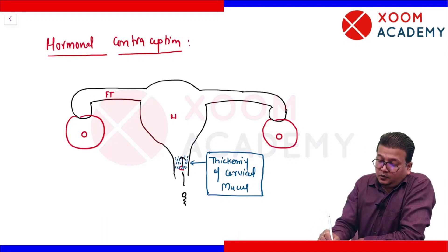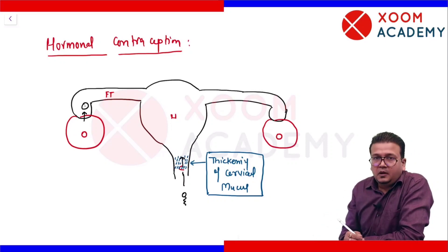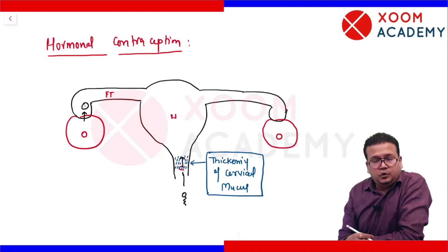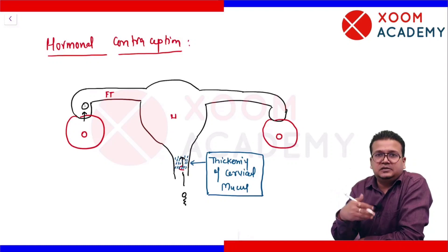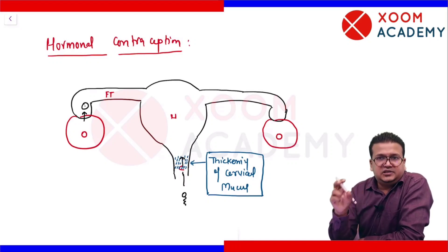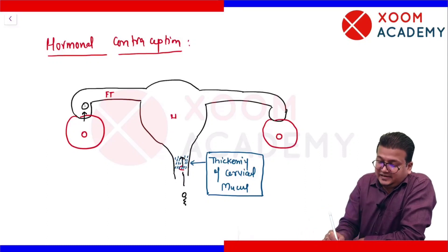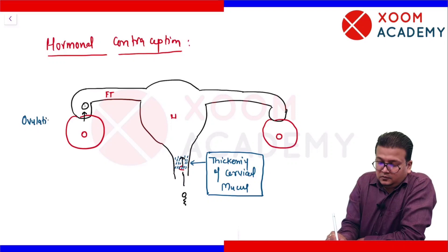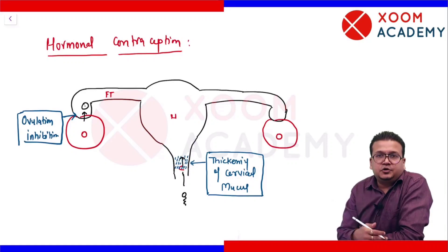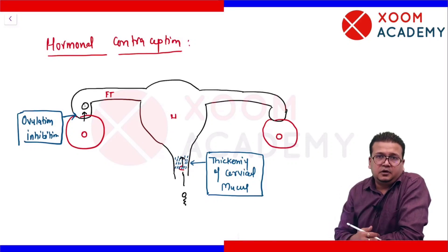Then an ovum has to be released by the ovary. Release of the ovum is dependent on the activity of FSH and, more importantly, LH. You all know LH surge in females causes ovulation. So ovulation can be prevented by affecting the level of FSH and LH — this is ovulation inhibition, the second mechanism.